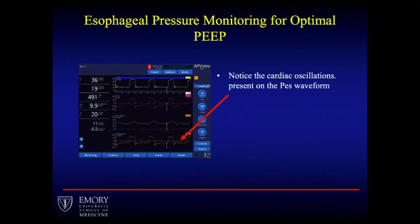Looking at the waveforms — on the second waveform up, if you can see the red arrow, you can see rhythmic oscillations on the bottom two waveforms. That is your cardiac oscillation superimposing on your esophageal pressure waveform, and it's a good indicator to verify correct catheter placement.